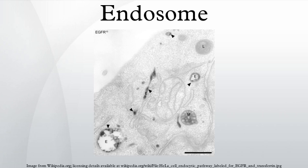In biology, an endosome is a membrane-bounded compartment inside eukaryotic cells. It is a compartment of the endocytic membrane transport pathway from the plasma membrane to the lysosome. Molecules internalized from the plasma membrane can follow this pathway all the way to lysosomes for degradation, or they can be recycled back to the plasma membrane.